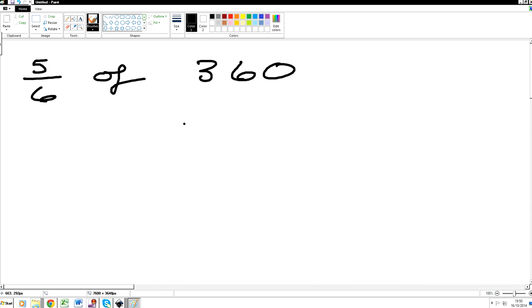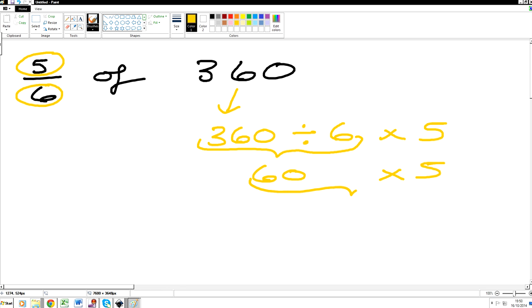So what we're going to do, we're going to start off with 360 first of all, and then we divide it by the bottom number 6, and then we times it by 5. So you can set it out like this. 360 divided by 6 is equal to 60, and then we times it by 5. That will give us an answer of 300.